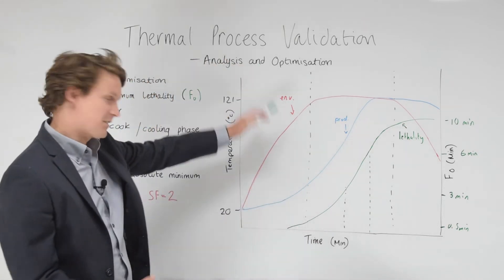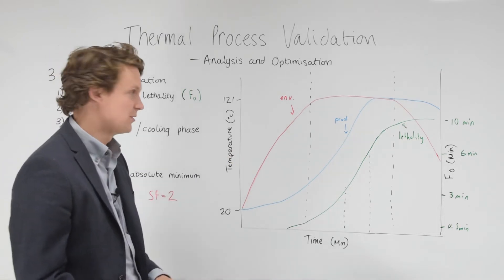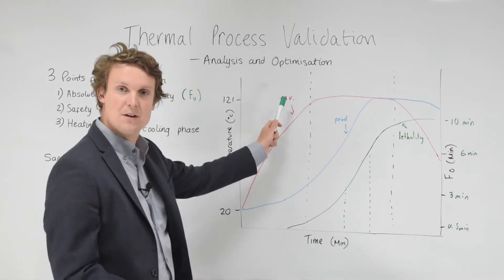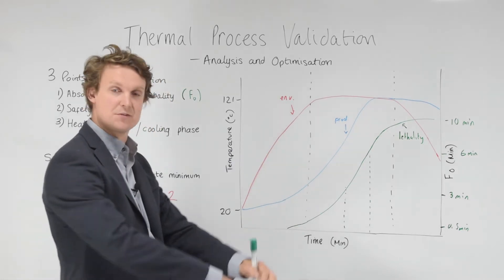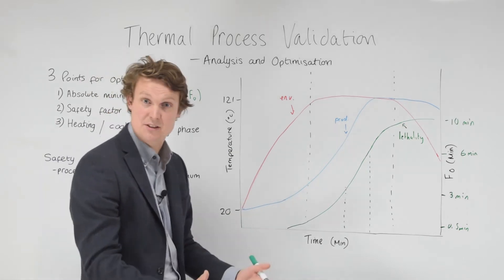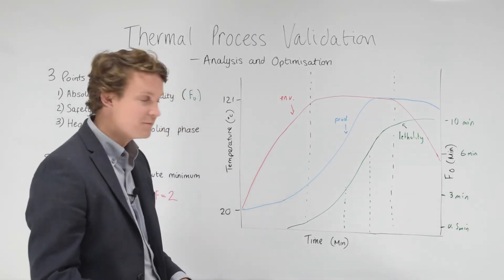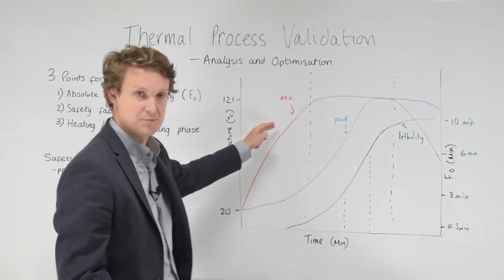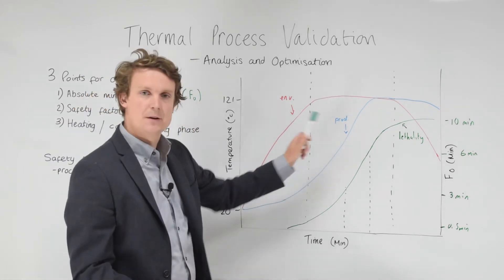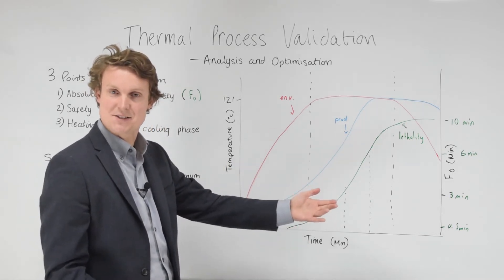So we're going to get data that looks a little bit like this, taken from a thermal process validation study. We have three plots on the graph. We have in red the environment temperature. That is the temperature of the environment within the processing equipment, within a retort, within a kettle or oven. That is the temperature that the product is seeing through the process.